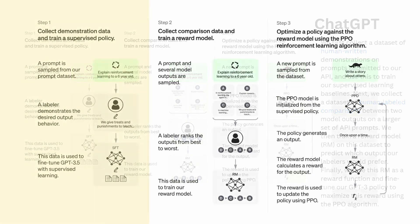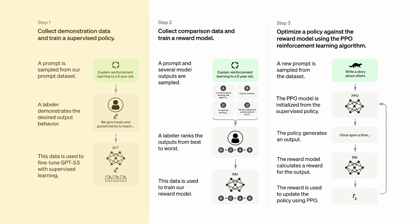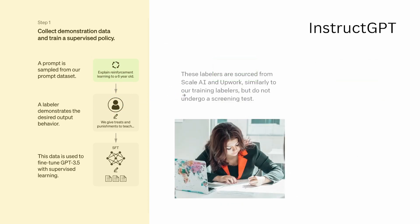Let's look at this in a little more detail. Step one: at first we have a prompt — a sentence, like 'explain reinforcement learning to a six-year-old.' Then you have a person who physically sits down and writes a short abstract response to this prompt.